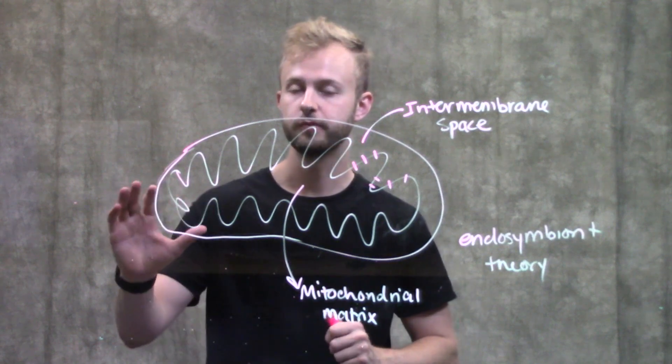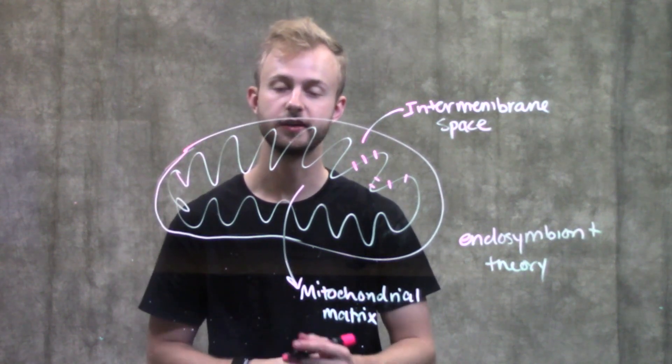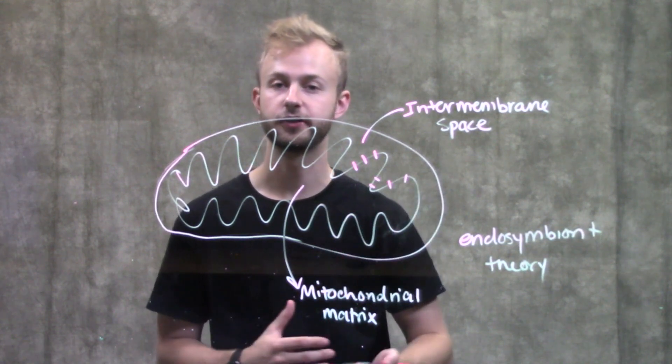Just to review: we have two membranes, the outer membrane and the inner membrane. The inner membrane is really highly folded to increase the surface area to really get the most out of that space for cellular respiration.